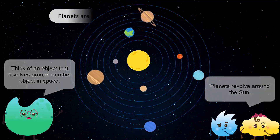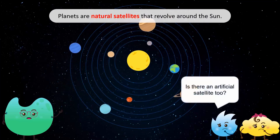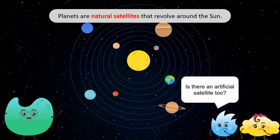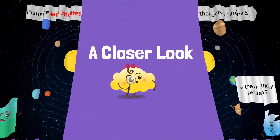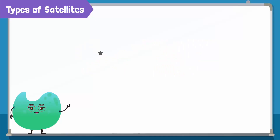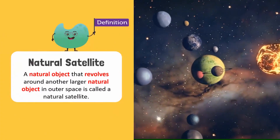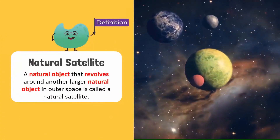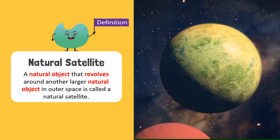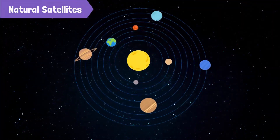Planets are natural satellites that revolve around the sun. What do you mean by a natural satellite? Does that mean there is an artificial satellite too? Let's have a closer look at the types of satellites. Satellites are of two types: natural satellites and artificial satellites. A natural object that revolves around another larger natural object in outer space is called a natural satellite. For example, the planets are natural satellites that revolve around the sun.